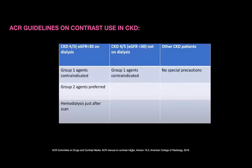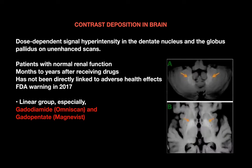Contrast deposition in the brain: repeated injection of linear group contrast agents can cause dose-dependent signal hyperintensity in the dentate nucleus and globus pallidus. This can occur in patients with normal renal function, months to years after receiving the drugs. It has not been directly linked to adverse health effects per the FDA warning of 2017, but can occur with linear agents like gadodiamide and gadopentate.